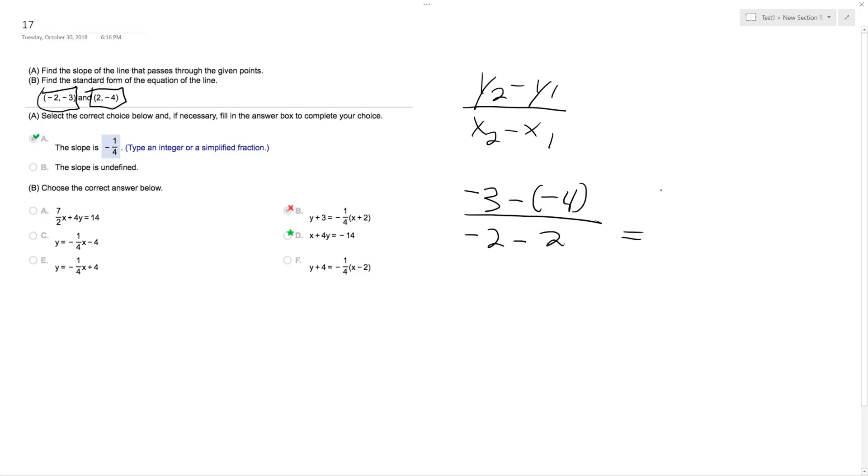So I end up with negative 3 minus negative 4, so that's negative 3 plus 4 over negative 2 minus 2, negative 4. So I get positive 1 over negative 4, which is negative 1 fourth.